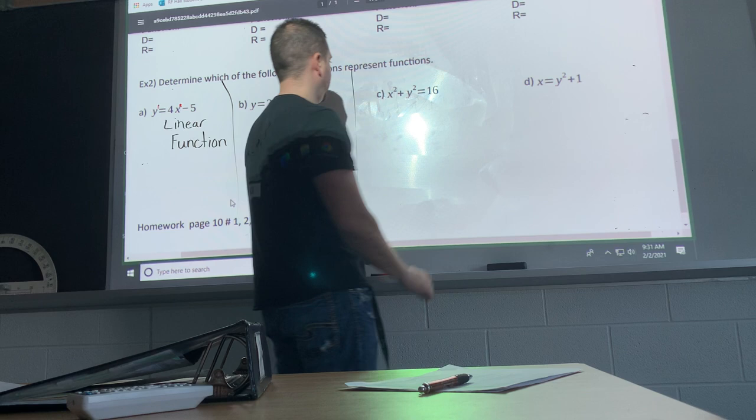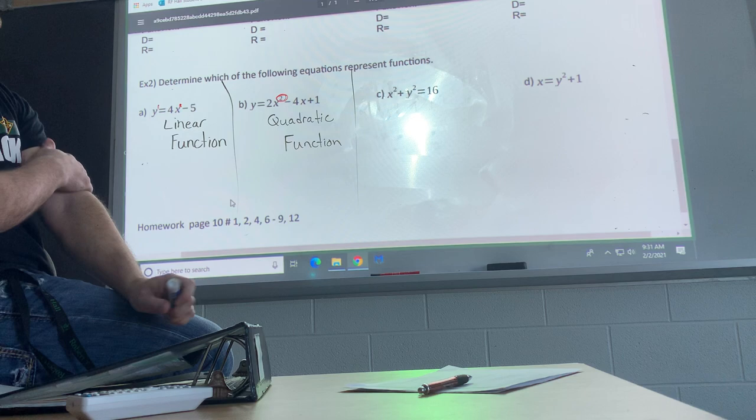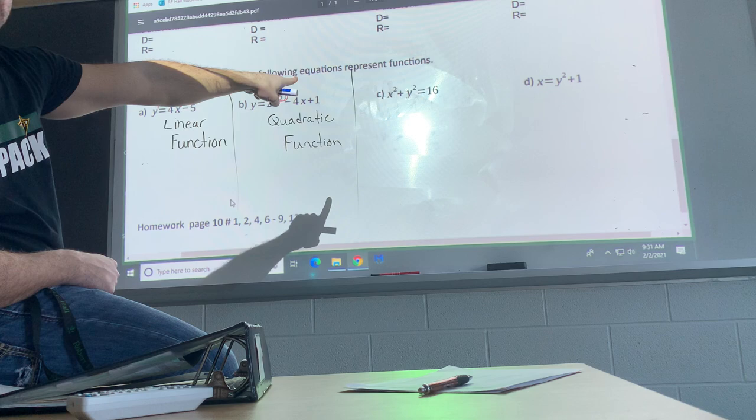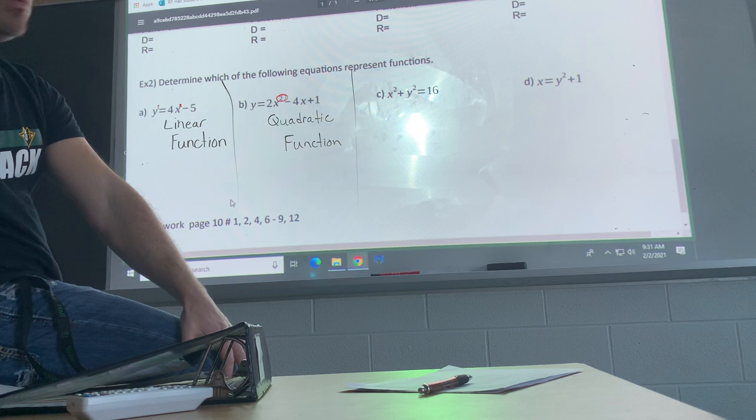Okay, now we have one that has both an x squared and a y squared. Let's see if you guys remember, if you guys did this last year, I know that for sure. What if I were to graph that? What would it be? So x squared plus y squared equals 16. So if you guys remember this, what would it be?